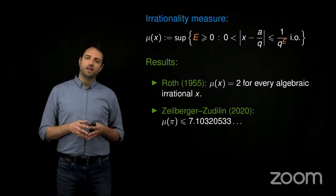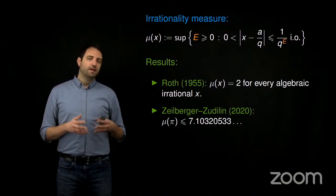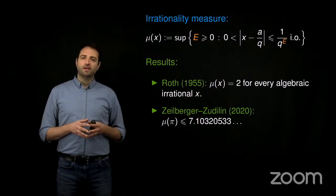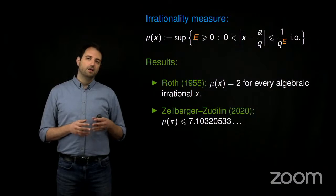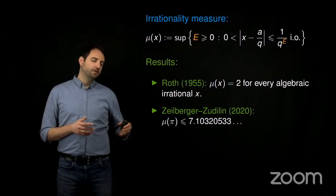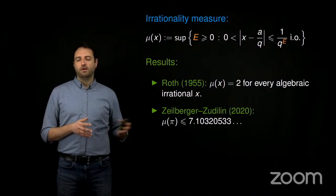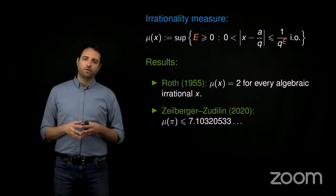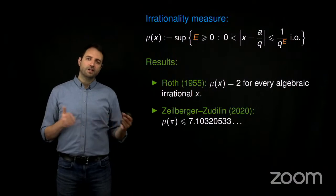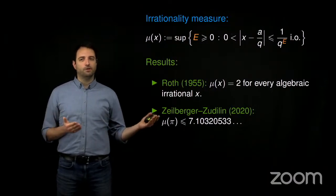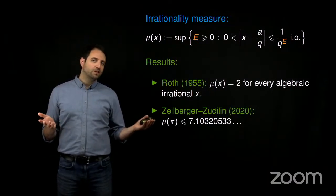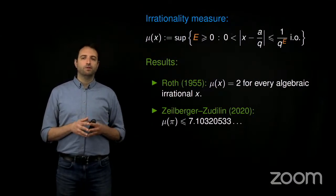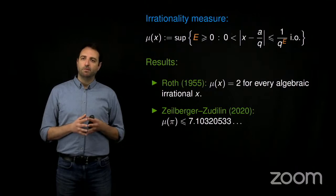What about transcendental numbers? For example, let's take π, arguably the most famous one. Salikhov and Zudilín proved that the rationality measure of π is at most 7.1, improving on various other results. And of course we also know it's at least 2 from Dirichlet's theorem. But as you can see, there is a pretty big gap between this upper and lower bound. We believe the actual rationality measure of π equals 2, but we cannot prove this for now.